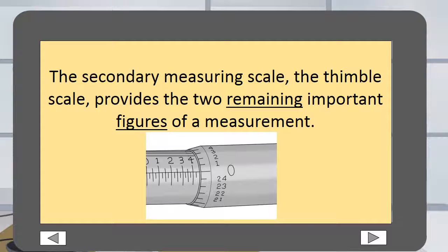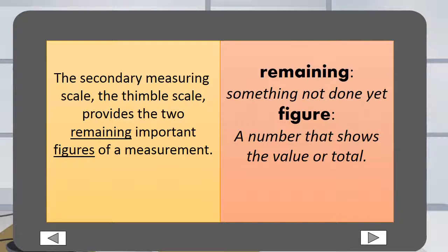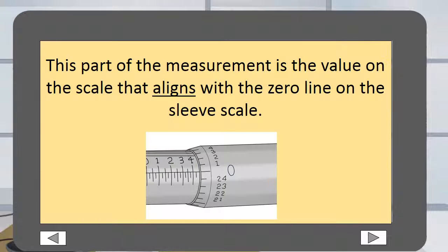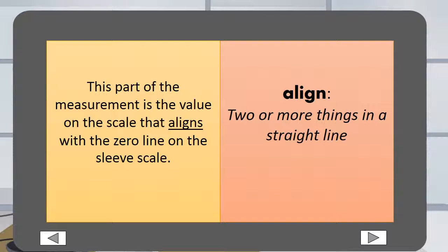The secondary measuring scale, the thimble scale, provides the two remaining important figures of a measurement. Remaining means something not done yet. Figure is a number that shows the value or total. This part of the measurement is the value on the scale that aligns with the zero line on the sleeve scale. Align means two or more things in a straight line.